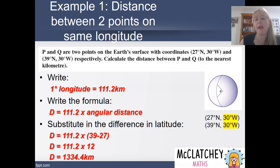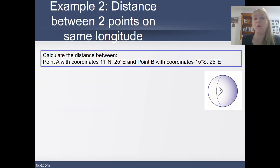Now let's think about if we had points on the same longitude, but the latitude, we've got one that's above the equator and one that's below. And that's the case with this example here. I've got point A is north of the equator and point B is south. You might be wondering, what do I do in situations like that?